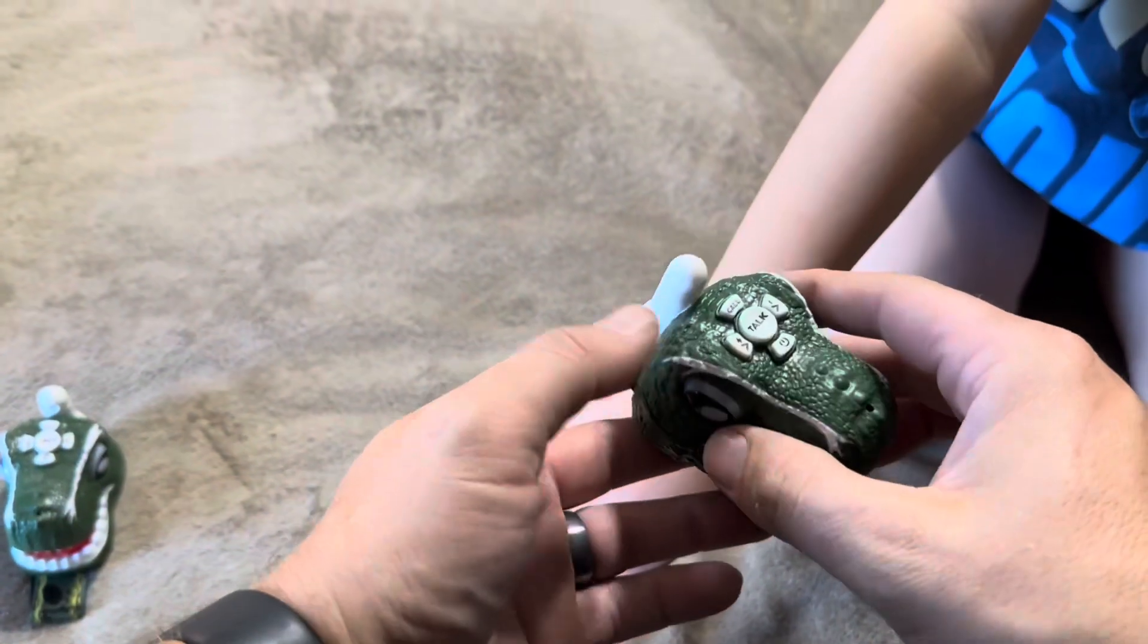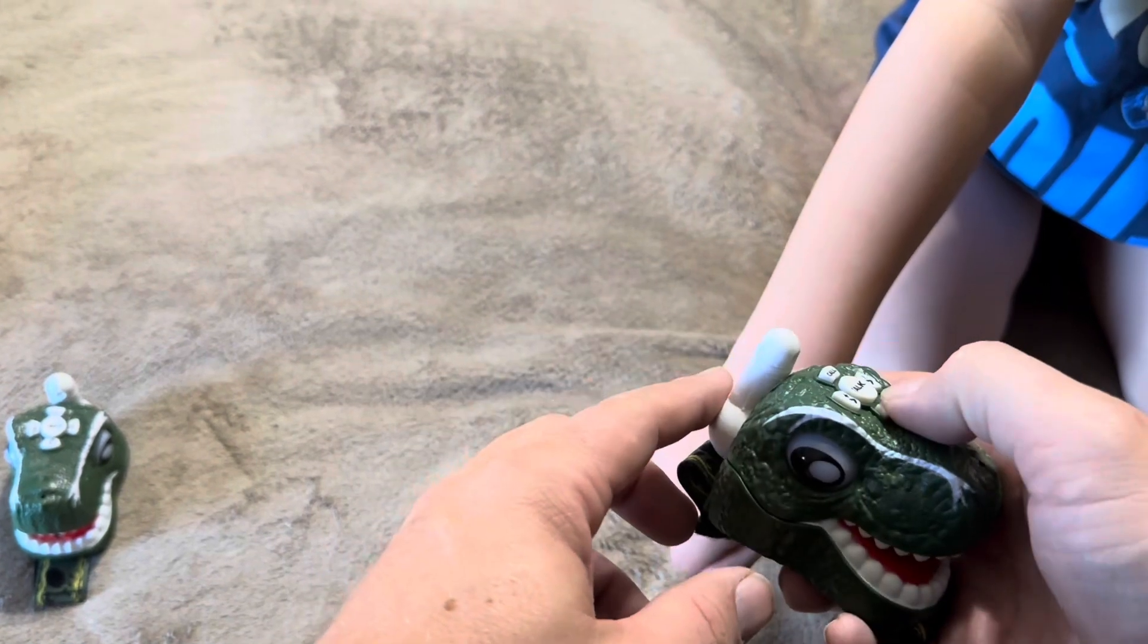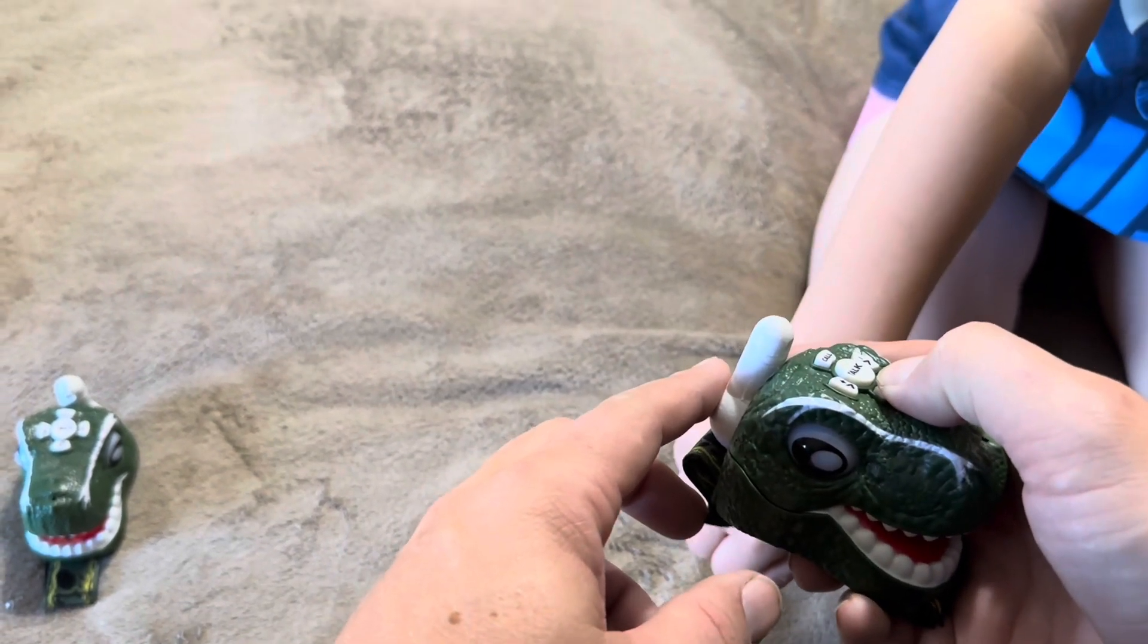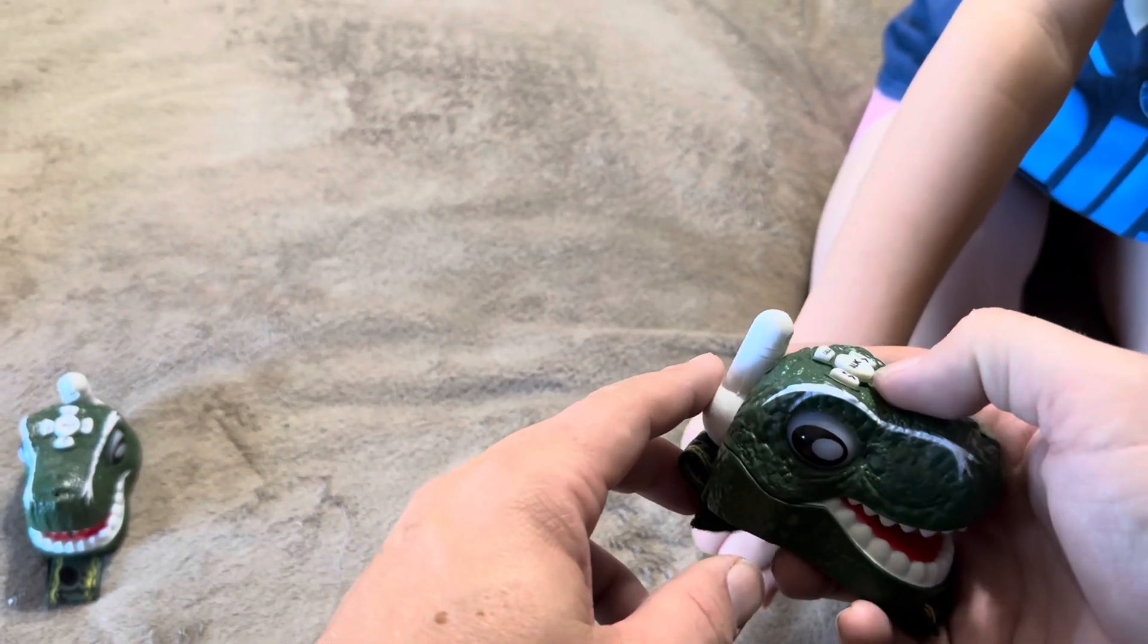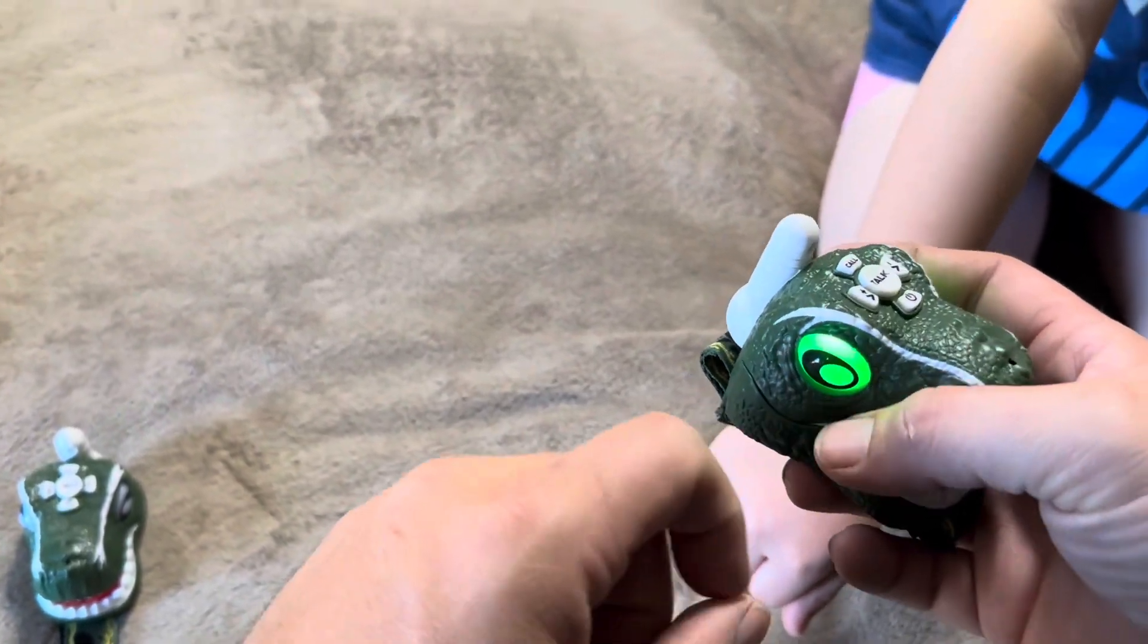Now once you get the batteries in this then to turn on you're just going to push and hold down the power button. And you'll know that it's on because the eyes are going to light up green. So just go and push that to turn that off. I already actually had it on. So then I'm going to push again. And then when it lights up like that then you know it's going to be on.